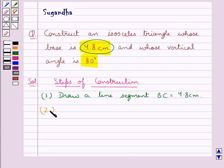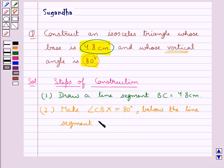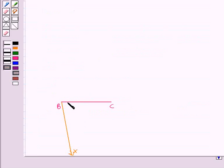Now in the next step we make angle CBX equal to 80 degrees, that is the measure of the vertical angle. And we draw this angle below the line segment BC. So this angle CBX is of measure 80 degrees.